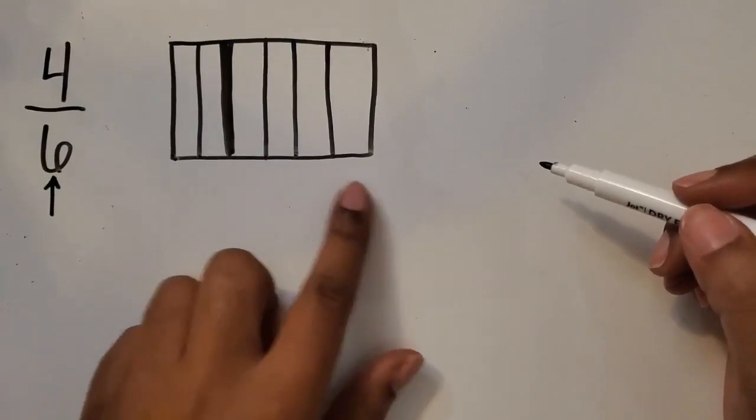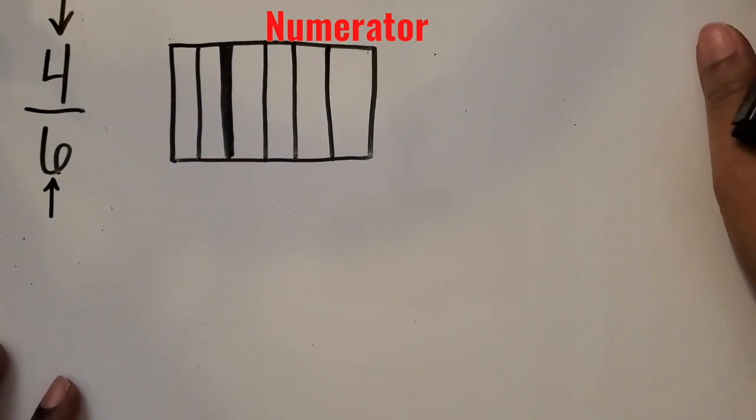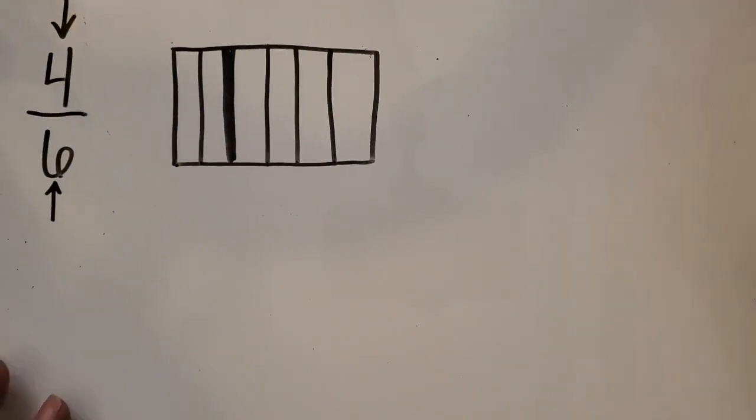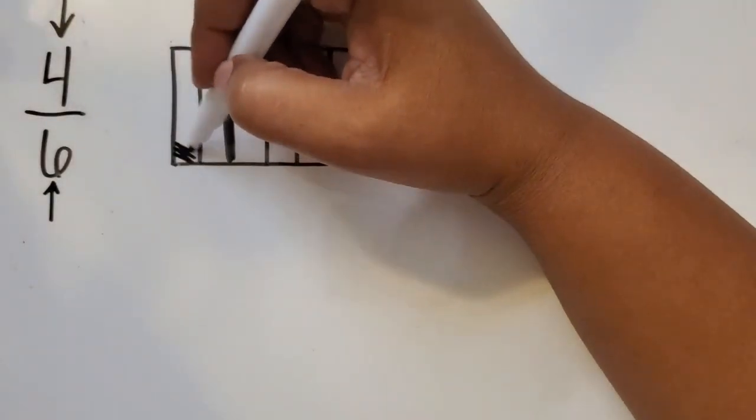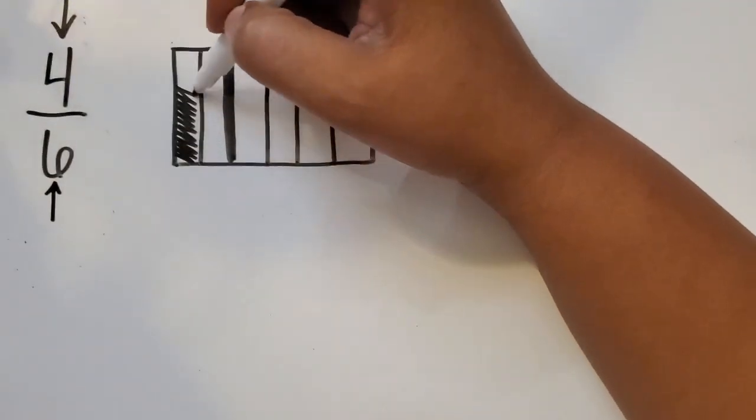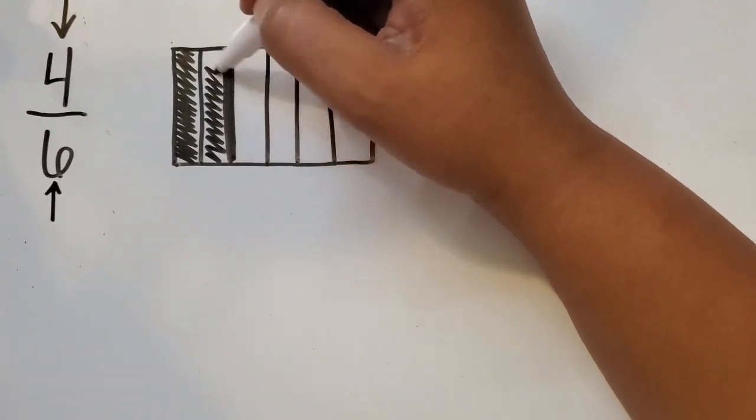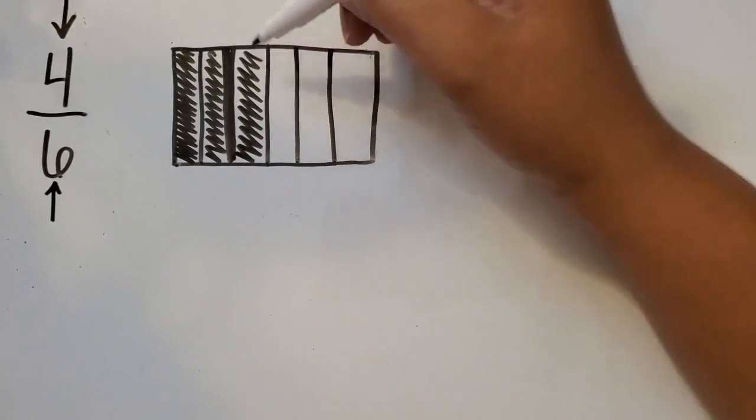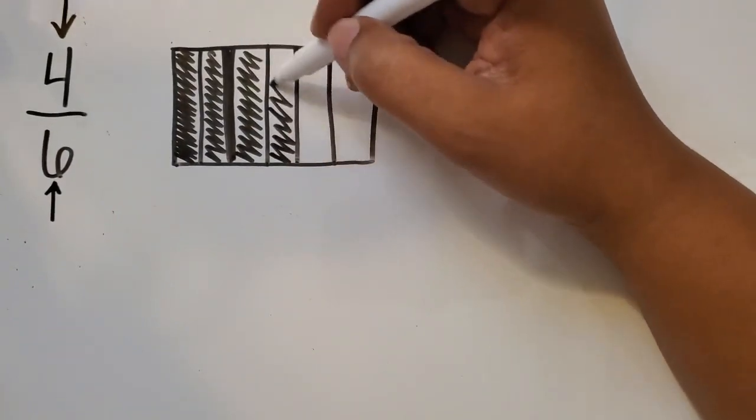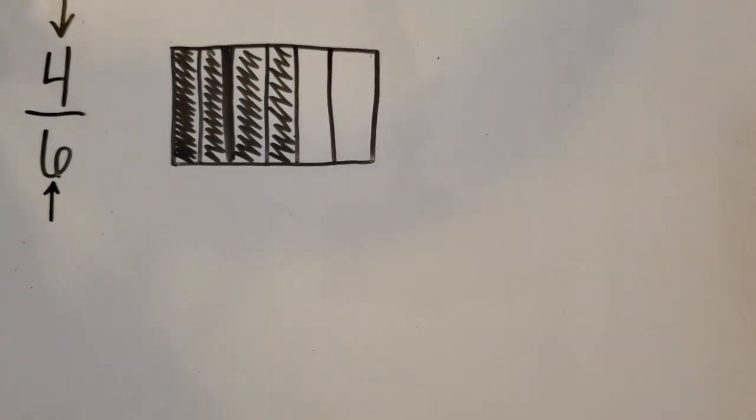So we have 6 equal parts. Now our numerator is 4, and that tells us how many of those 6 equal parts do we have, or when we're drawing a model, are we going to shade in. So I'm going to draw in 4 of those 6 equal parts. So out of 6 equal parts, we have 4 that are shaded in, and that is representing 4/6.